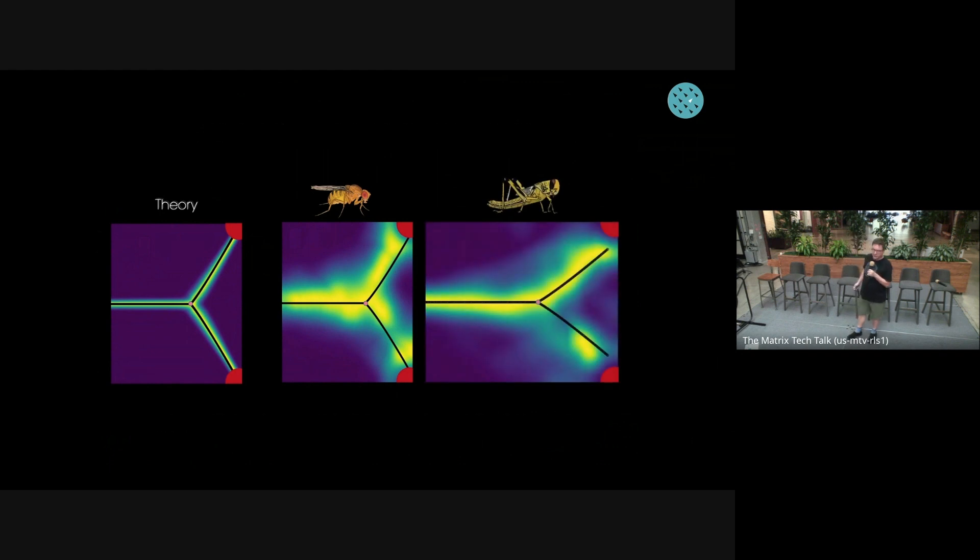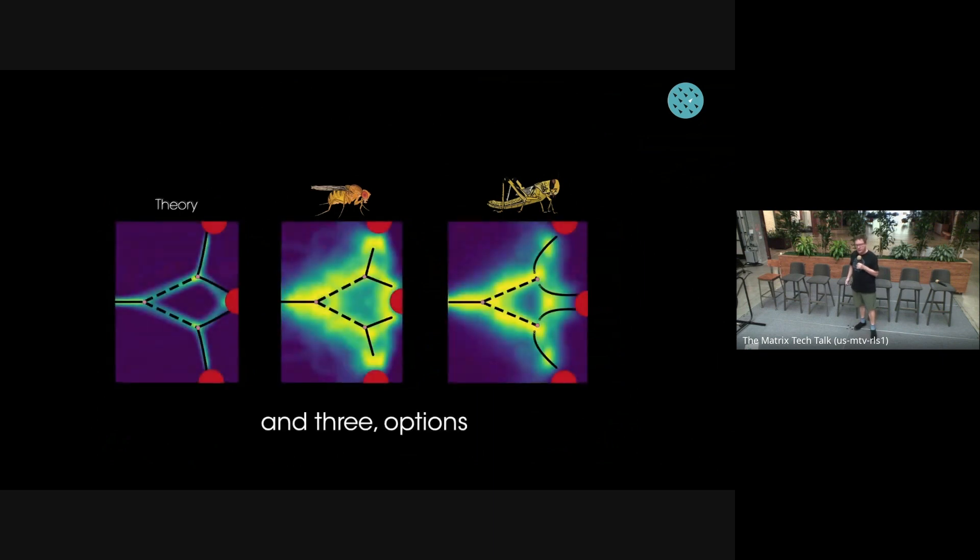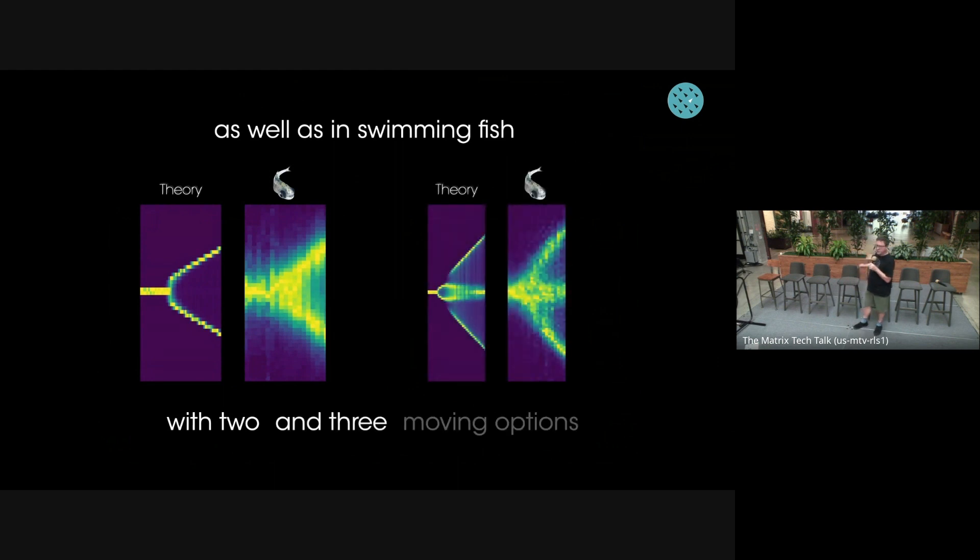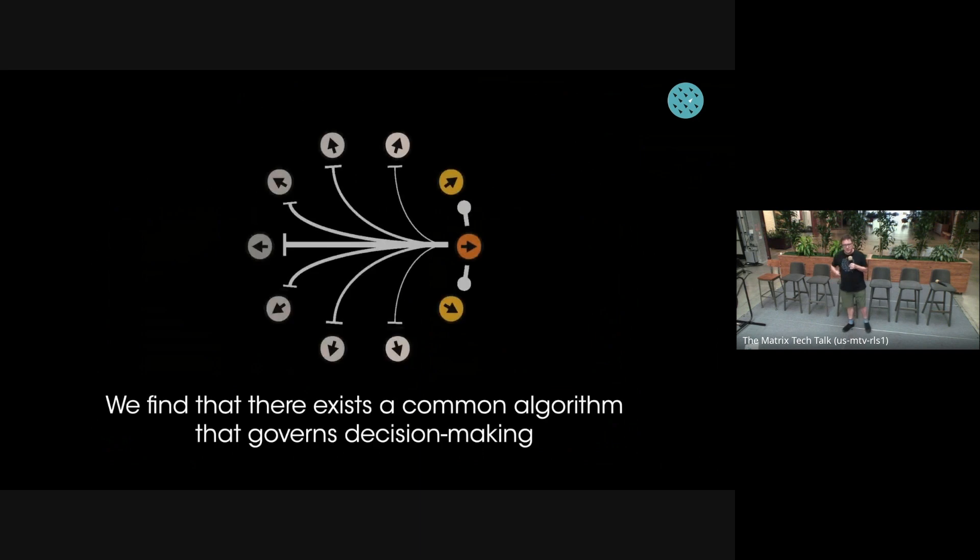We can see this clear branching. We tested this for two options, and also for three options. And as predicted, we see this double bifurcation. And this is including in schooling in swimming fish. So we think this is a general feature.